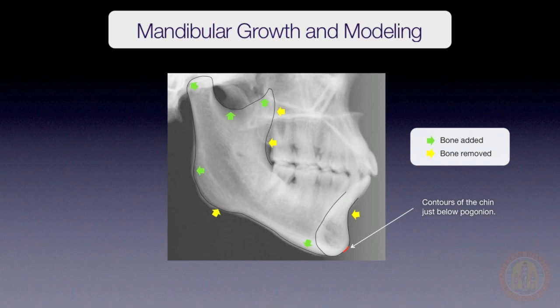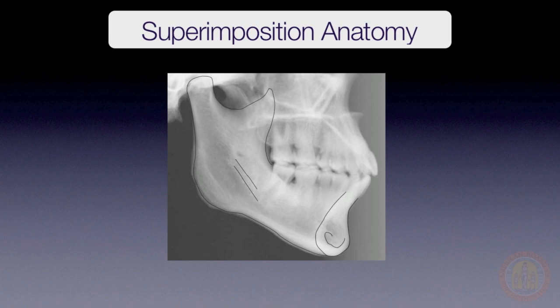The teeth move within the mandible and along with the mandible while it is being displaced. To determine the displacement of the mandible, the orthodontist must subtract the tooth movements that occur within the mandible — derived from the mandibular superimposition — from the total changes, which are derived from the cranial base superimposition.